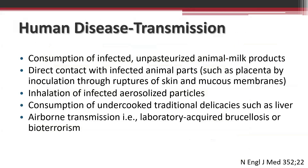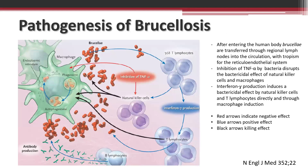Human disease transmission is primarily through consumption of infected unpasteurized animal milk products, but can also occur through direct contact with animal parts such as placenta, direct inoculation, inhalation of infected aerosolized particles, undercooked traditional delicacies such as cattle liver, or airborne transmission in lab accidents. Lab-acquired brucellosis is also counted under bioterrorism in certain situations.